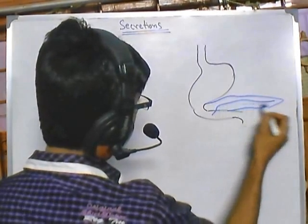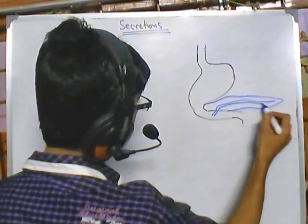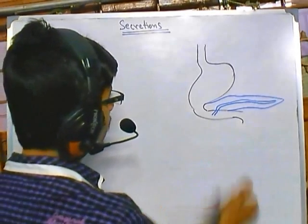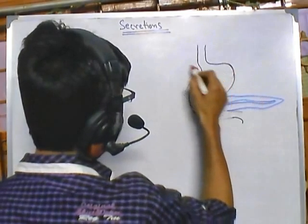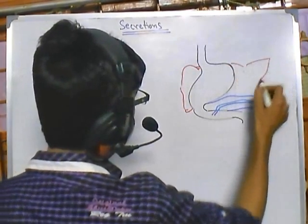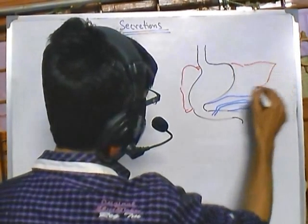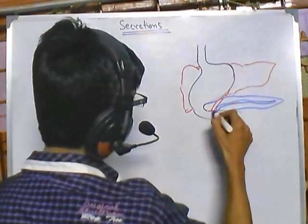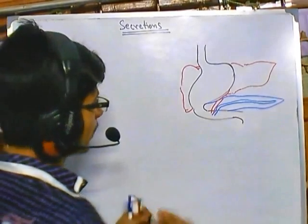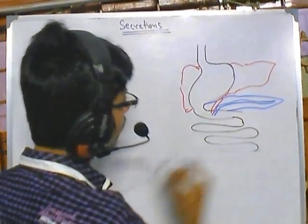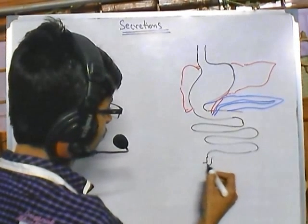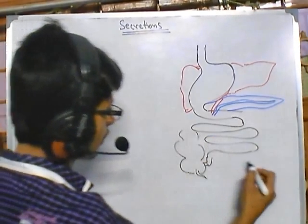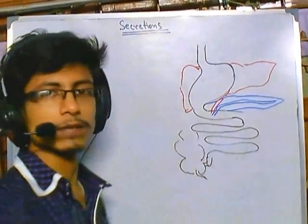The pancreas has a channel coming from it and opening into the duodenum. We also have the liver on the back side, with a channel from the liver also attaching into the duodenum. The rest of the structure includes the small intestinal region and then the large intestinal region. This is the overall structure of our digestive system.